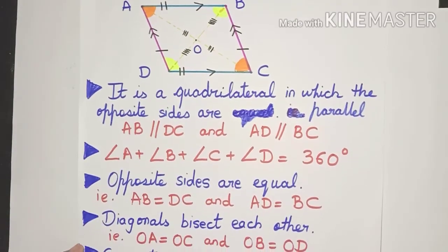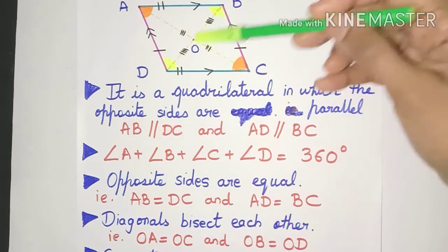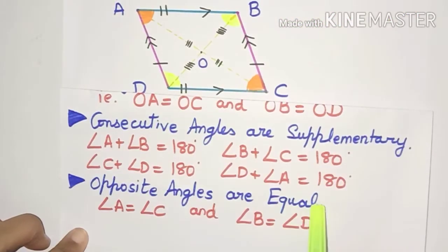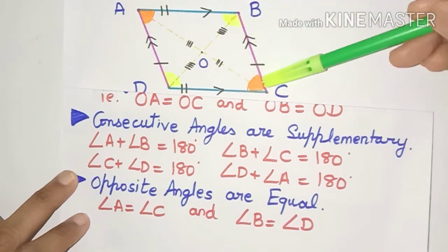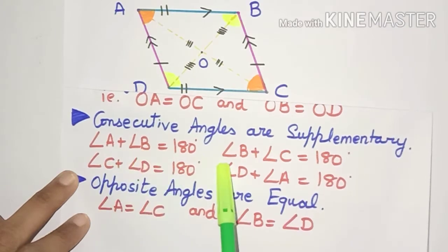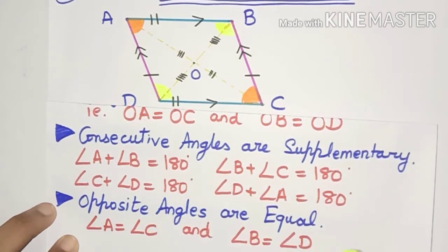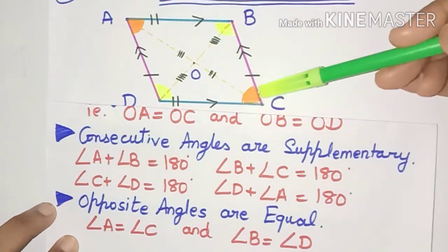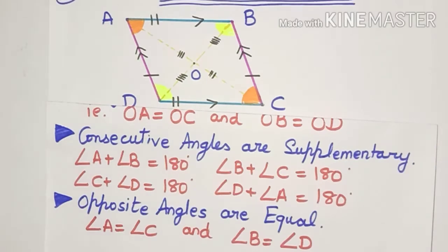The diagonals of a parallelogram bisect each other, meaning OA is equal to OC and OB is equal to OD. Another property is that consecutive angles are supplementary — angle A plus angle B, angle B plus angle C, angle C plus angle D, and angle D plus angle A each sum to 180 degrees. Another important property is that opposite angles are equal: angle A is equal to angle C, and angle B is equal to angle D.